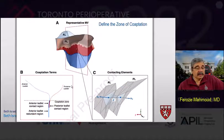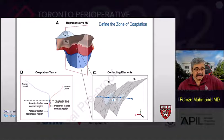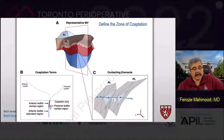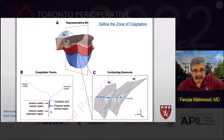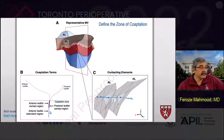Based on that, they defined the two anterior and posterior leaflets. They defined a plane from which the coaptation zone started. This is the anterior leaflet contact region, this is the posterior leaflet coaptation region, and this is the anterior leaflet redundant region. This represents the contact elements and the redundant elements, which you are normally unable to see with three-dimensional echocardiography because of poor resolution.